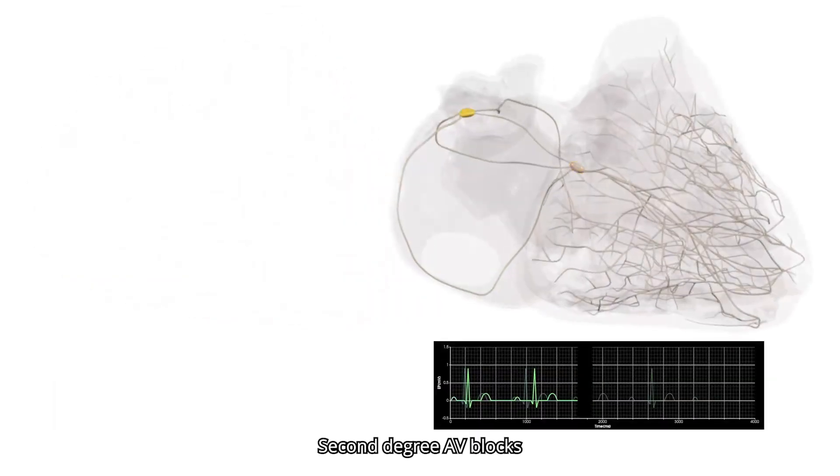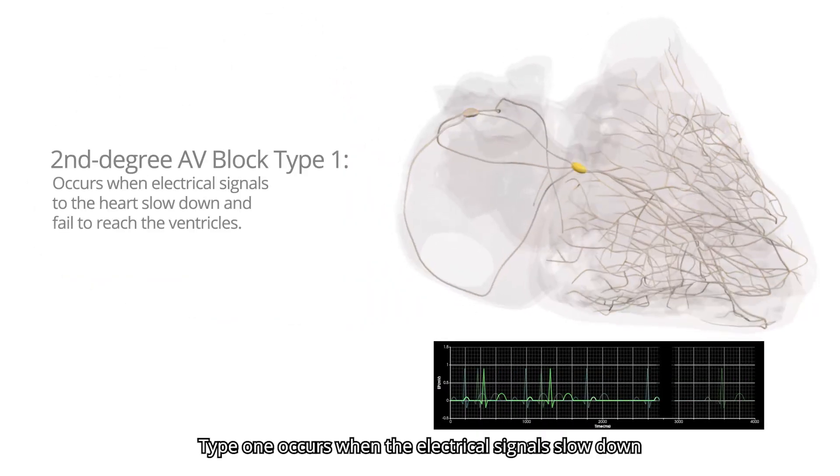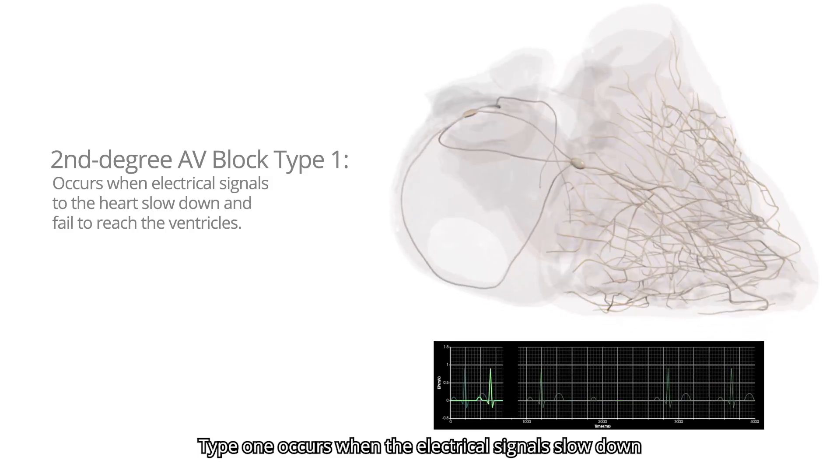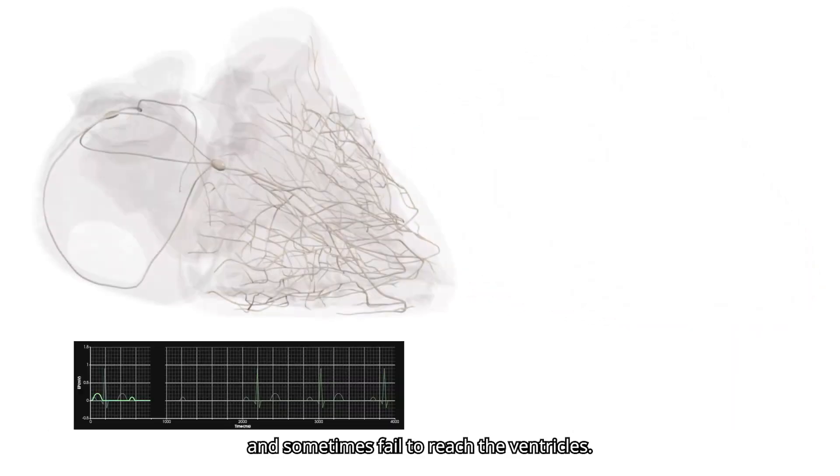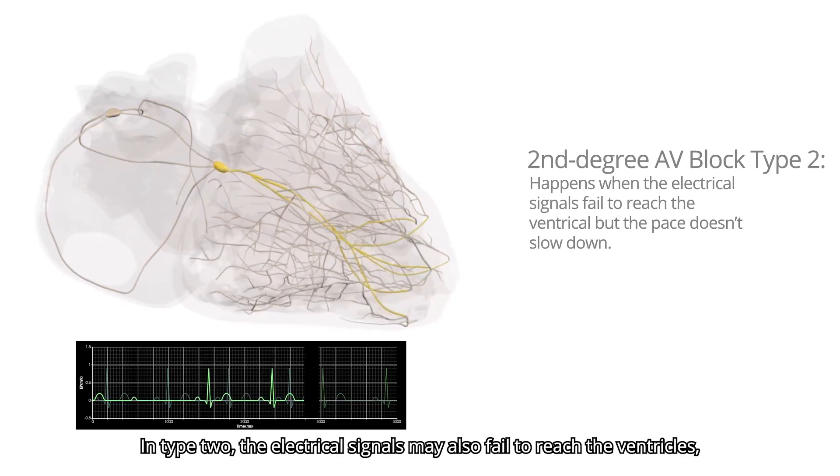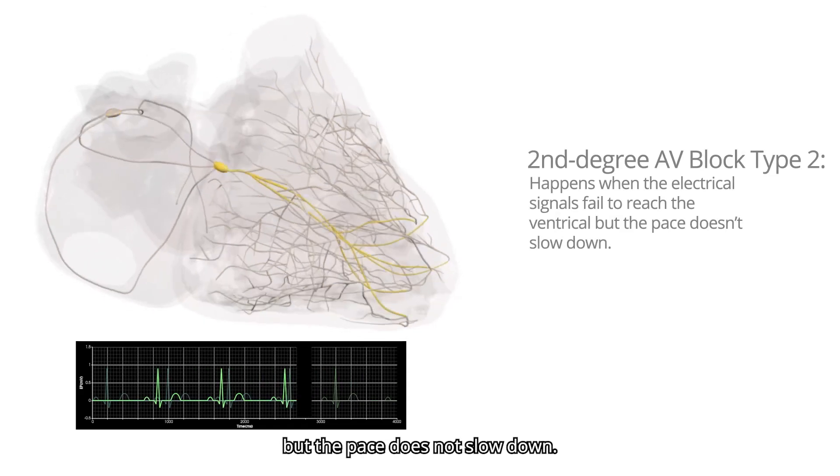Second-degree AV blocks are categorized into two types. Type 1 occurs when the electrical signals slow down and sometimes fail to reach the ventricles. In type 2, the electrical signals may also fail to reach the ventricles, but the pace does not slow down.